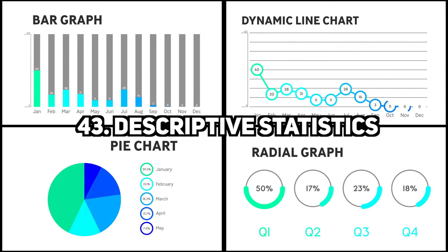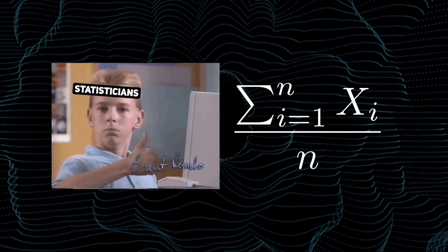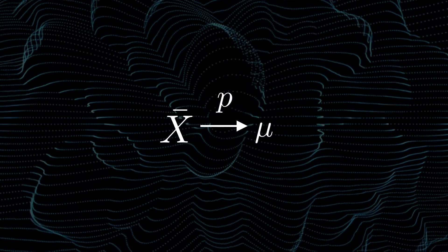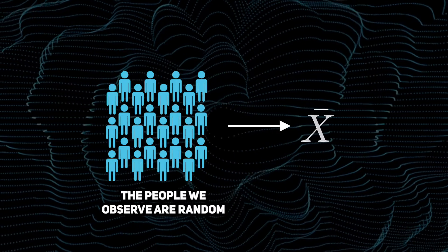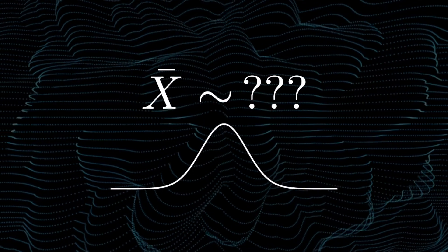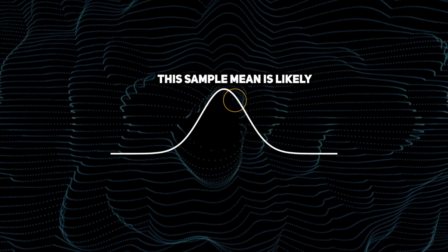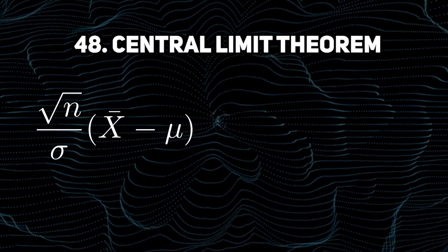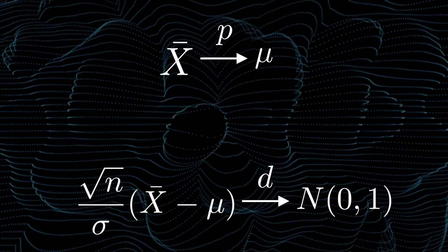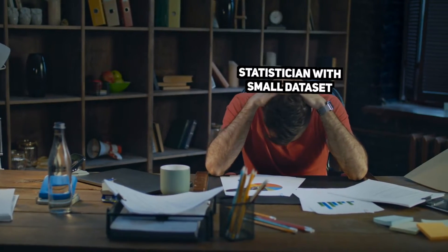This process is called inferential statistics because we're trying to infer about an unknown population based on collected data. This is distinct from descriptive statistics, which are used to describe the data we collect. The first estimator that people learn about is the sample mean, which has many good qualities. The law of large numbers tells us that when we collect large amounts of data, the sample mean will get very close to the population mean — we call this consistency. Because samples are random, estimators are also random variables, and it's crucial that we understand the distribution of the estimator, called the sampling distribution. The central limit theorem tells us that a function of the sample mean follows a standard normal distribution, assuming we have lots of data. When asymptotics don't apply, we can turn to other methods like the bootstrap.